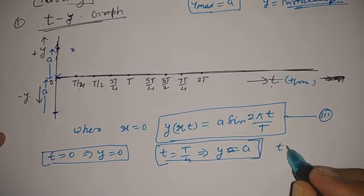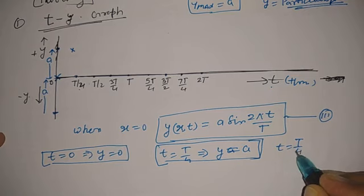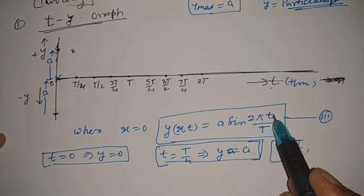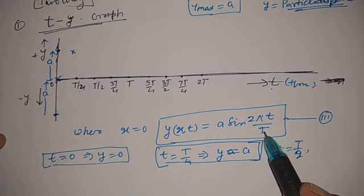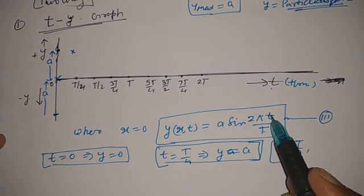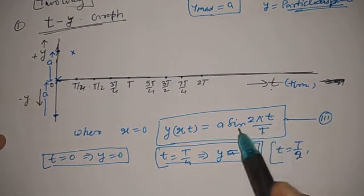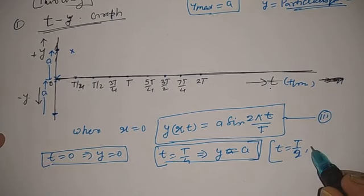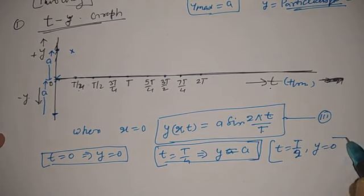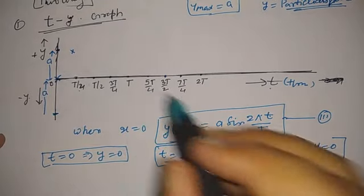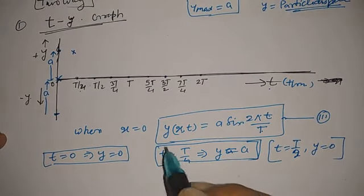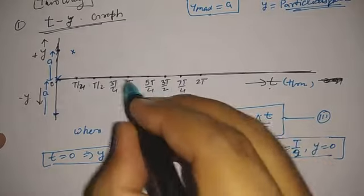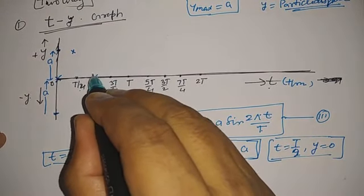When t = T/2: the 2 cancels by 2, T cancels by T, leaving only sin(π); sin(π) = 0, which implies y = 0 as well. So the third coordinate at t = T/2 is 0.